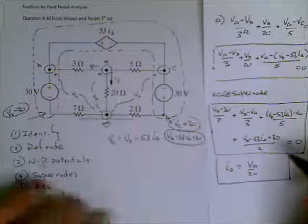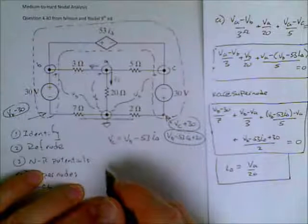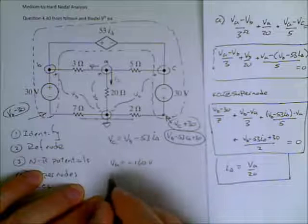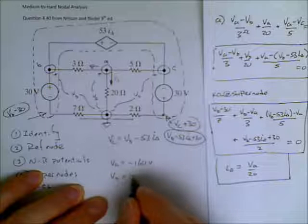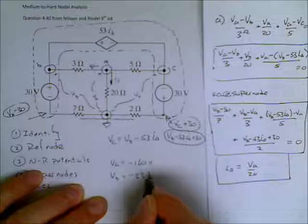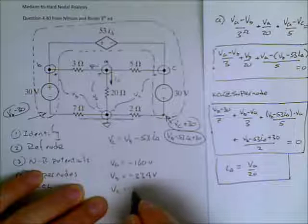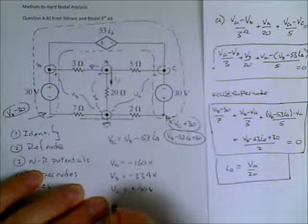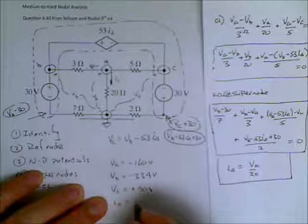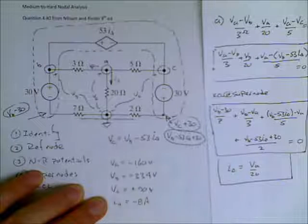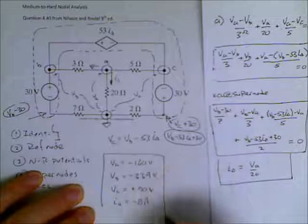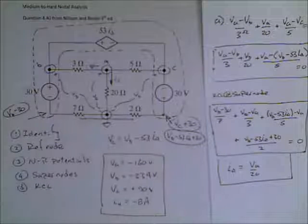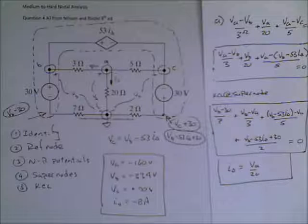I'll leave it to you to solve, but I'll give you the answers. We find that VA is equal to minus 160 volts. We find that VB is equal to minus 334 volts. And we find that VC is equal to plus 90 volts. And finally, we find that I delta is equal to minus 8 amps. And here's our solution for a reasonably hard nodal analysis technique with several supernodes. Thanks.